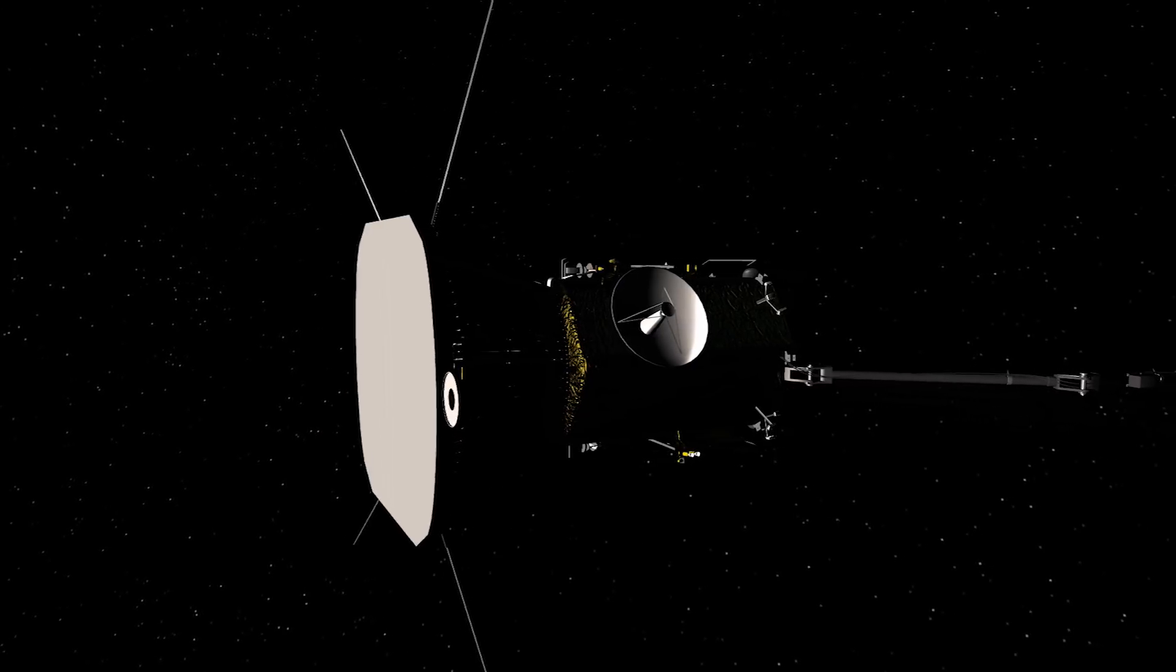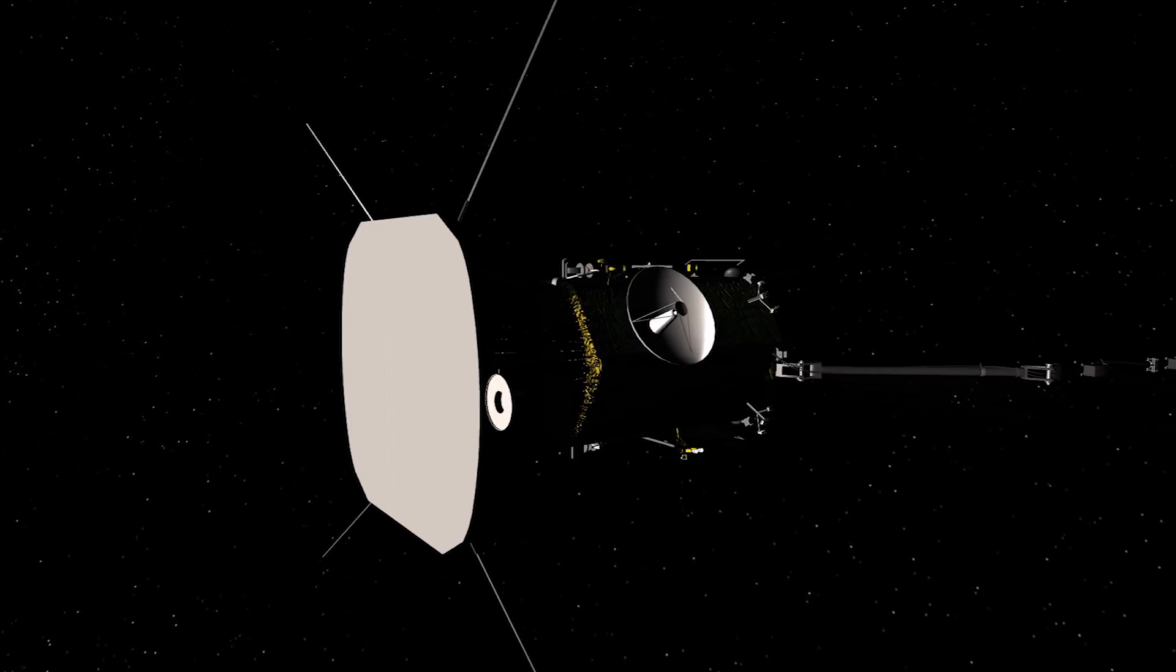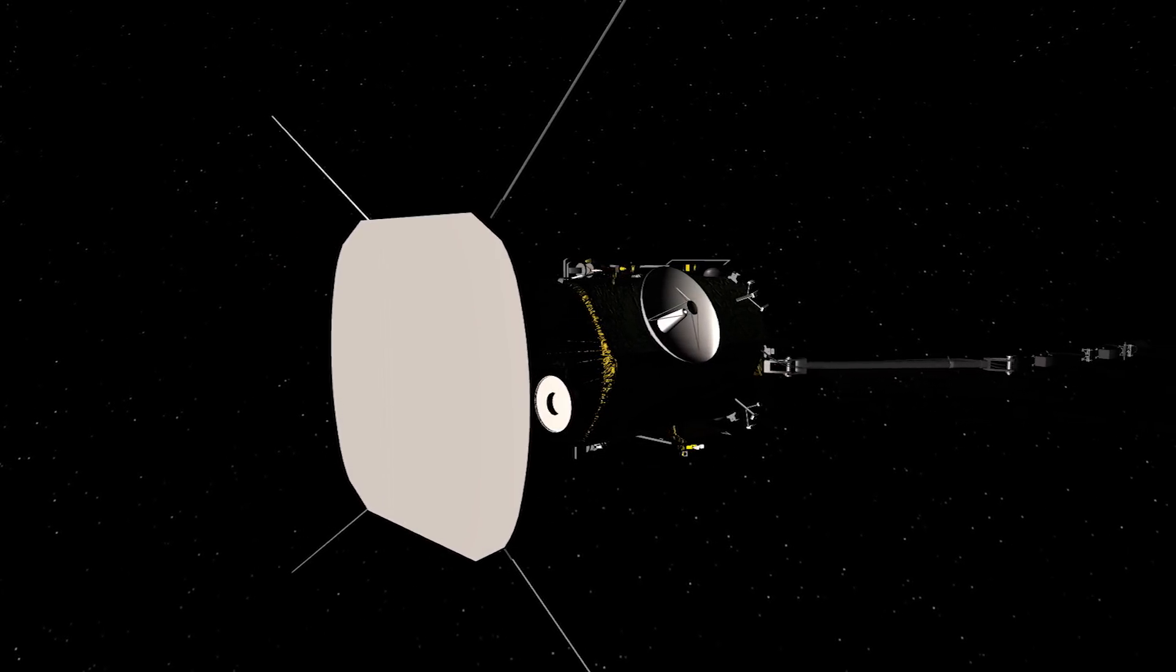Over the course of its seven-year mission, the Parker Solar Probe will orbit the Sun 24 times.